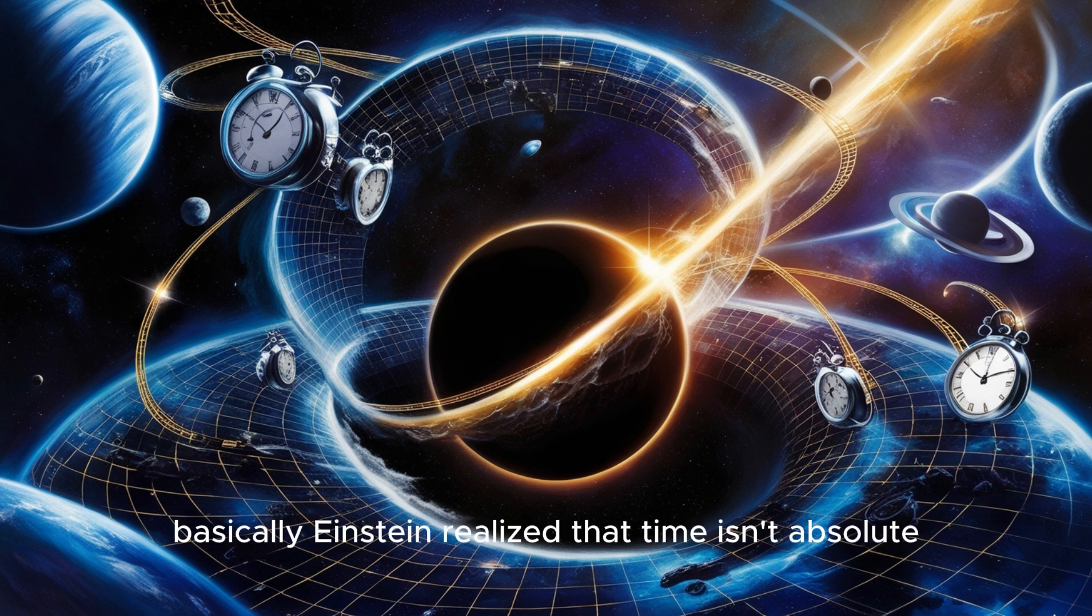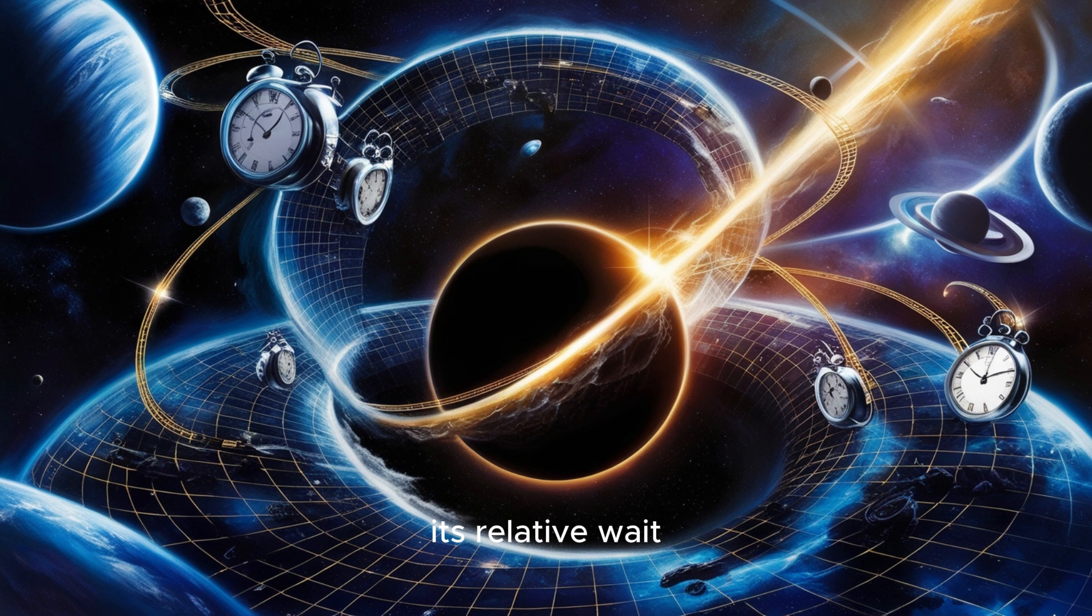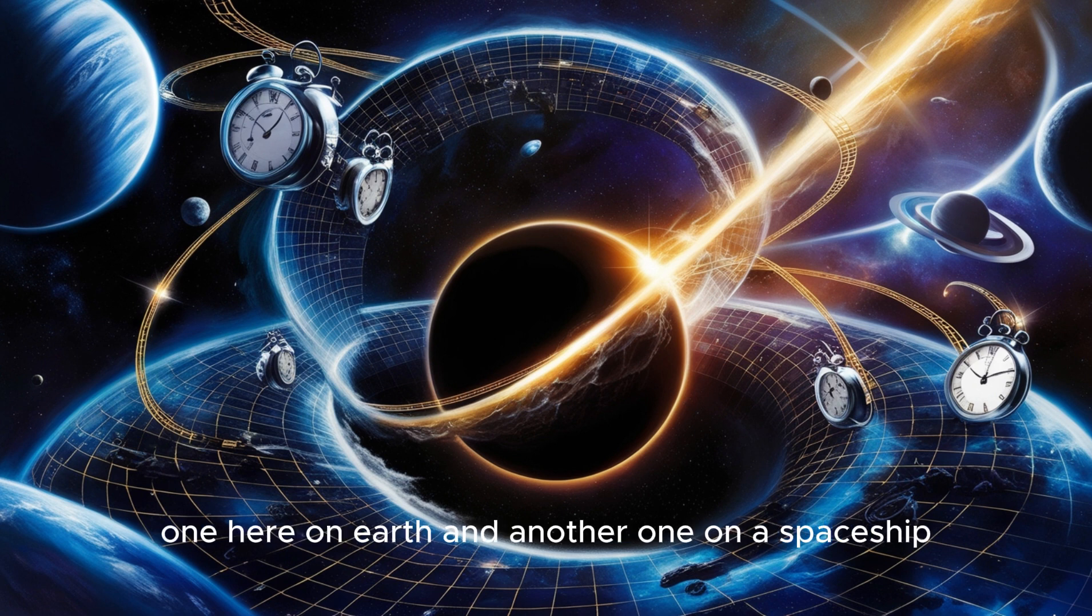Basically, Einstein realized that time isn't absolute. It's relative. Wait, hold on. So time can actually speed up or slow down? That sounds like something straight out of science fiction. I know, right? But it's a real thing.